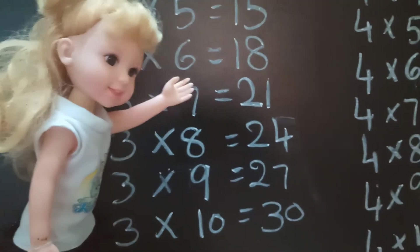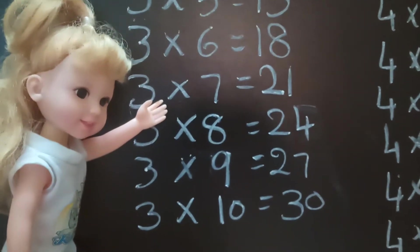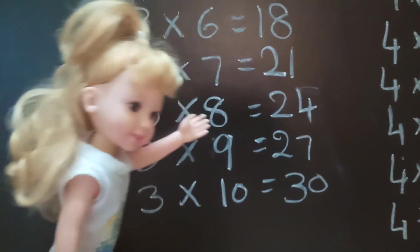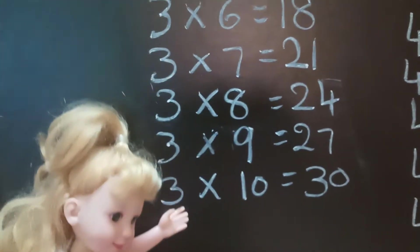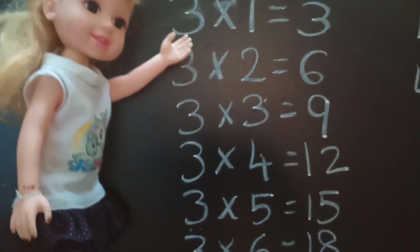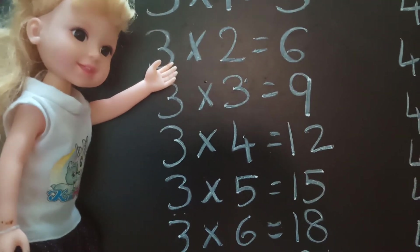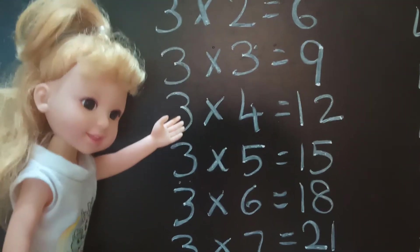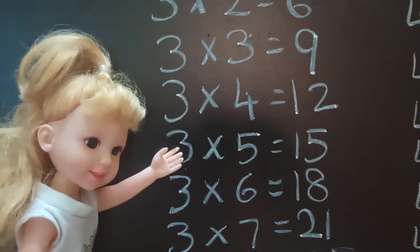3×6=18, 3×7=21, 3×8=24, 3×9=27, 3×10=30. 3×1=3, 3×2=6, 3×3=9, 3×4=12, 3×5=15.